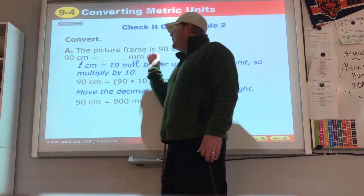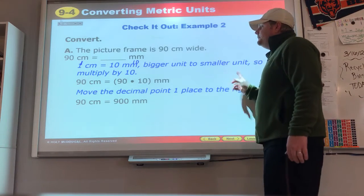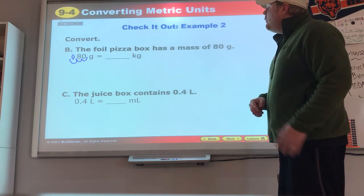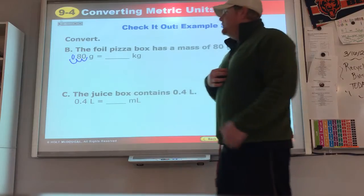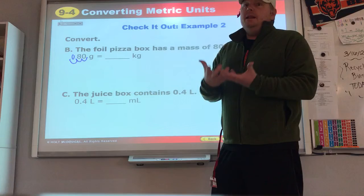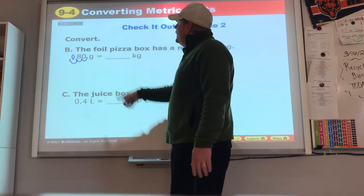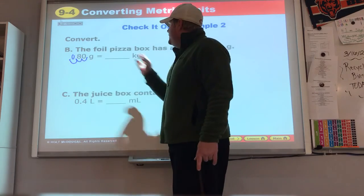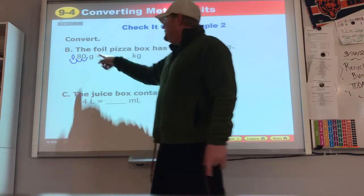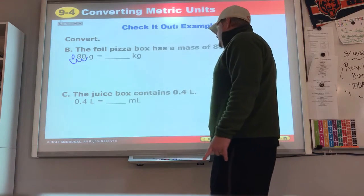Remember, we're going from something big to something smaller, it's multiply. Something smaller to something bigger, it's divide. The foil pizza box has a mass of 80 grams, and we want to turn it into kilograms. We go from something small, a gram, one loaf of bread, to a kilogram, that pack of potatoes. That's going from small to big, that means we divide. There are one thousand grams in one kilogram, so we divide by one thousand. Start at the decimal, one, two, and three. 0.08. Let's see if we were right, and we are.